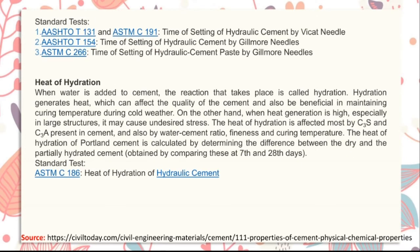Heat of hydration: when water is added to cement, the reaction is called hydration. The heat of hydration can affect cement quality but is also beneficial in maintaining curing temperature during cold weather. When heat generation is high, especially in large structures, it may cause undesired stress. Heat of hydration is affected most by C3S and C3A, and also by water-cement ratio, fineness, and curing temperature. It is calculated by determining the difference between dry and partially hydrated cement at 7 and 28 days.